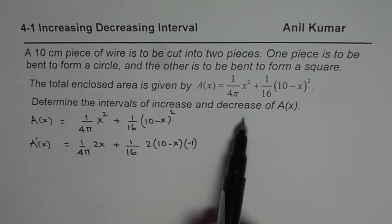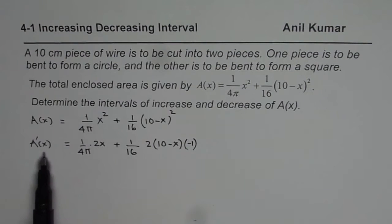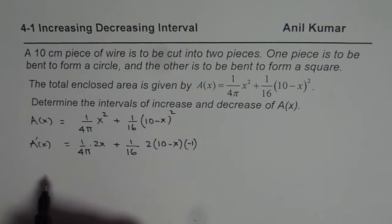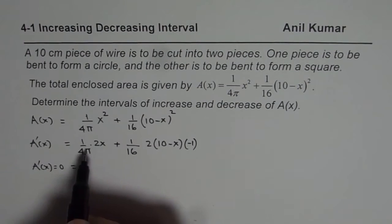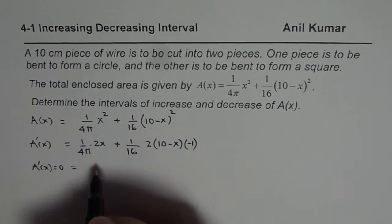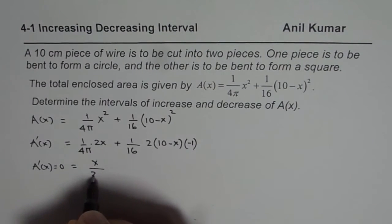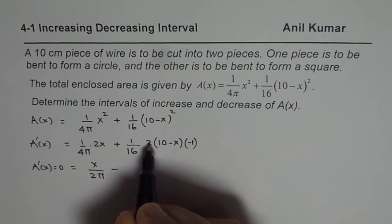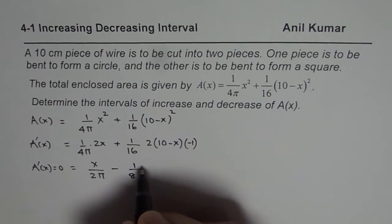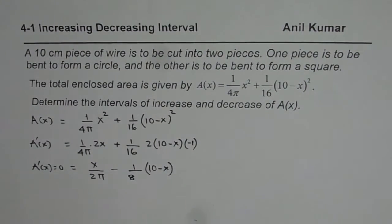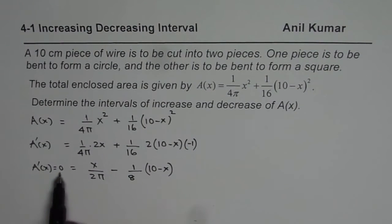To find the intervals of increasing and decreasing, we need to find where this derivative is zero, then determine whether it is positive or negative on either side. Setting A′(x) = 0 and simplifying, we get x/(2π) minus (1/8)(10 − x) = 0. Let us open the bracket and simplify further.